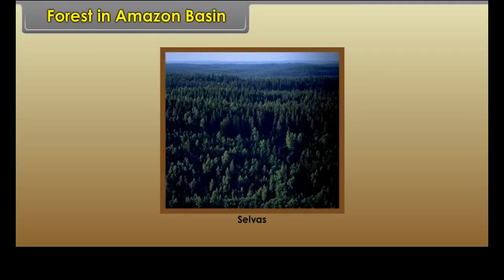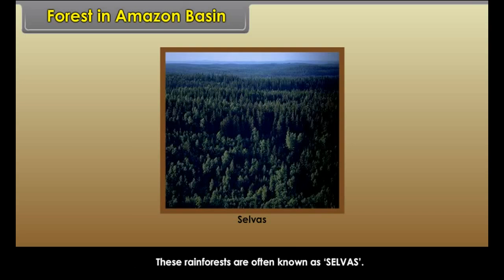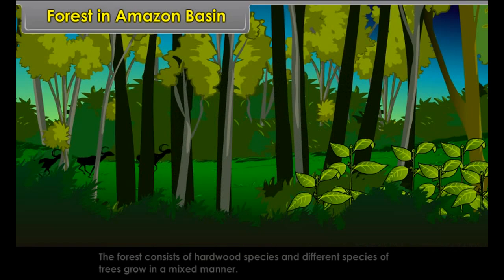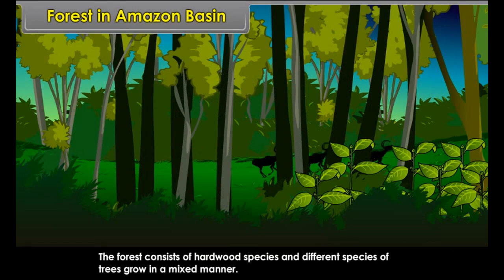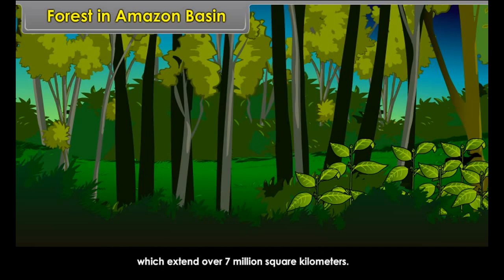The Amazon Basin has lush green forests which remain luxuriant and evergreen. These rainforests are often known as selvas. The forests are very thick and trees are very tall. The branches of trees intermingle and make a canopy. The forest consists of hardwood species and different species of trees grow in a mixed manner. Nearly one billion species of the world's flora and fauna flourish in the Amazonian rainforests, which extend over seven billion square kilometers.